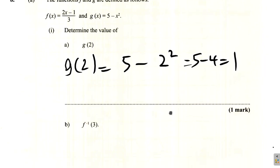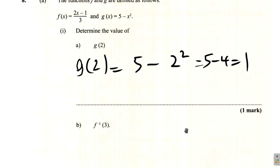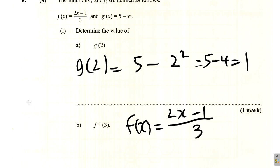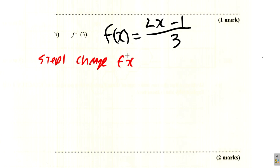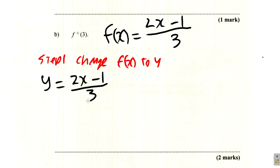Now let's find f inverse of 3. First, rewrite: f(x) = (2x − 1)/3. You have to remember the steps when inverting a function. Step 1: change f(x) to y. So we have y = (2x − 1)/3.